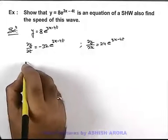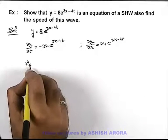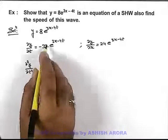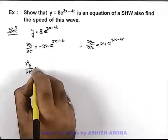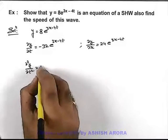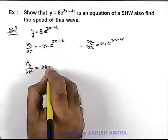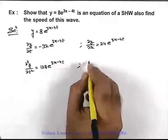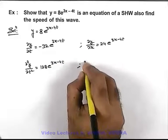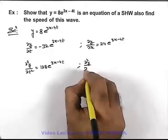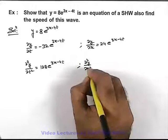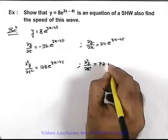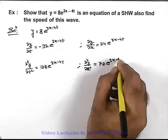Once again on differentiating, we get the acceleration of the particle, which can be given as ∂²y/∂t². On further differentiating it partially with respect to time, we get 128e^(3x-4t). And if we find the curvature of the displacement curve, ∂²y/∂x², this will give us 72e^(3x-4t).